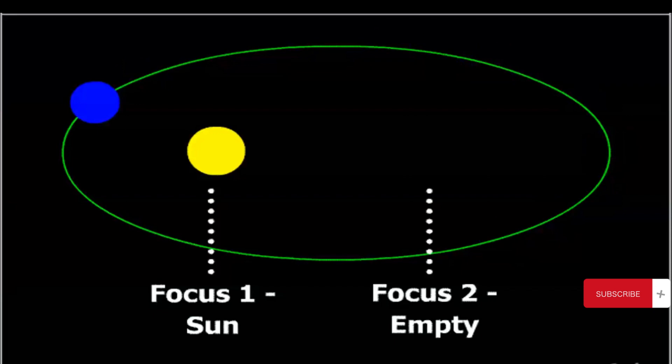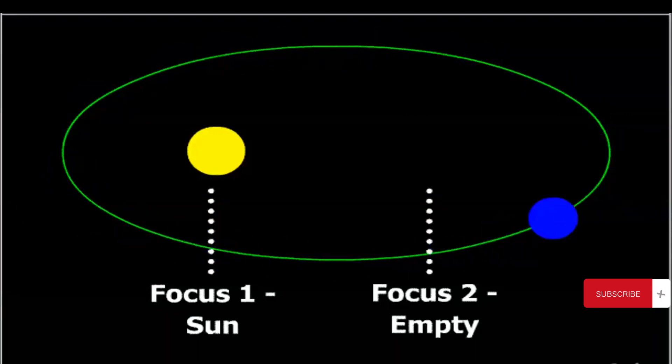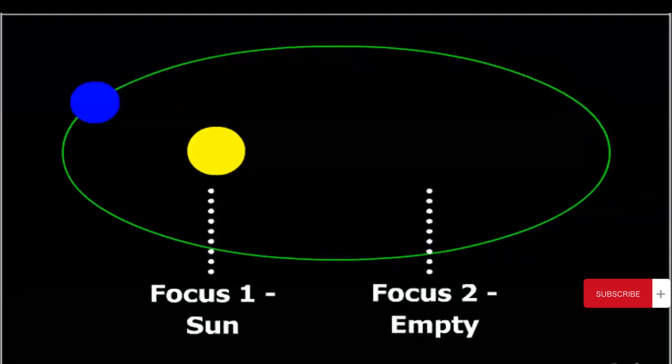Let's understand a few terms that are important in Kepler's second law. An ellipse has two foci, which is the plural of focus, which are the points inside the ellipse that are not at the center. These foci are crucial in understanding the law.